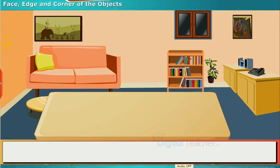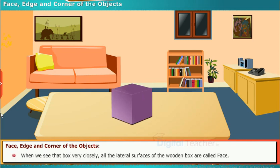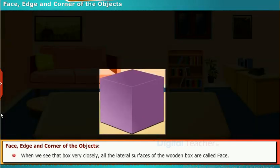We have to know about the elements of shapes like edge, face and corner. Let us take a wooden box to understand these terms. When we see that box very closely,